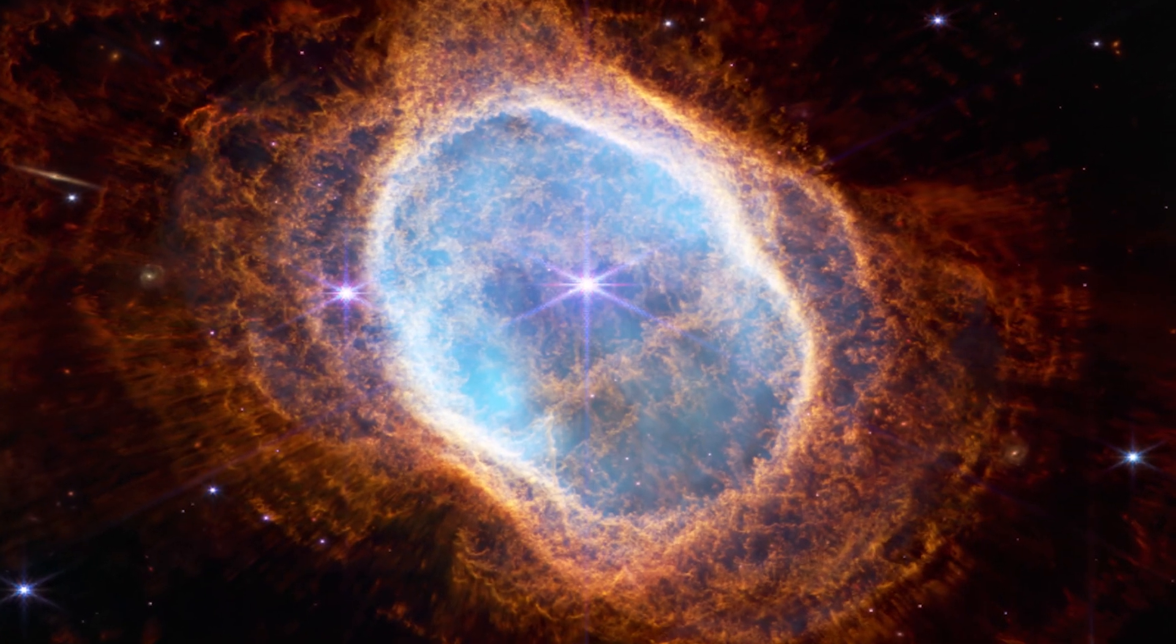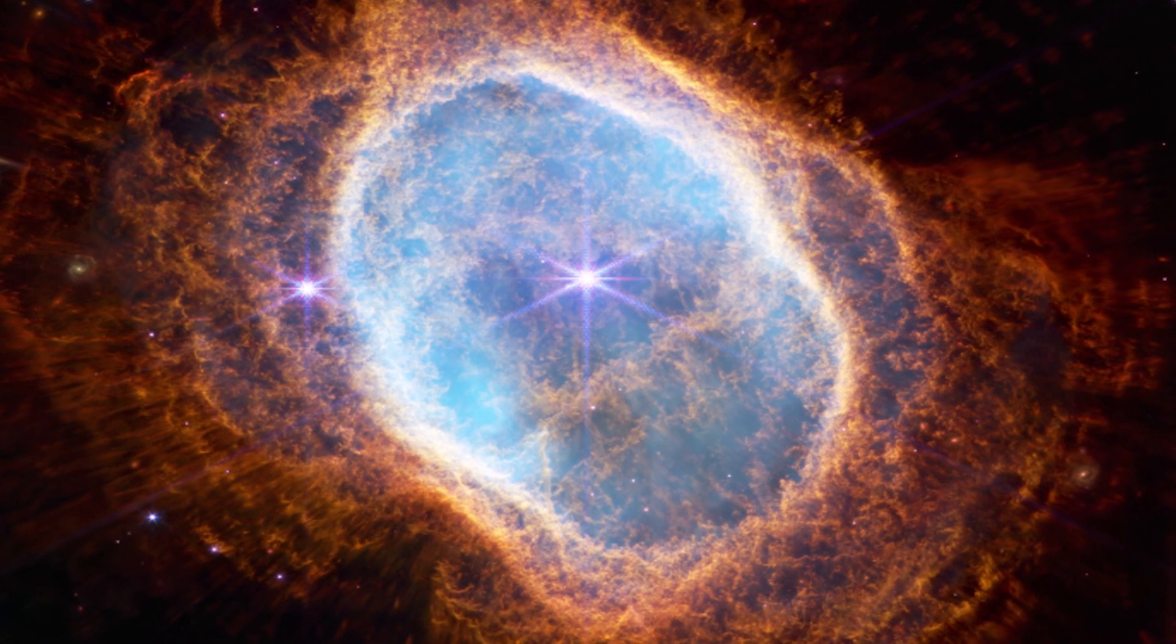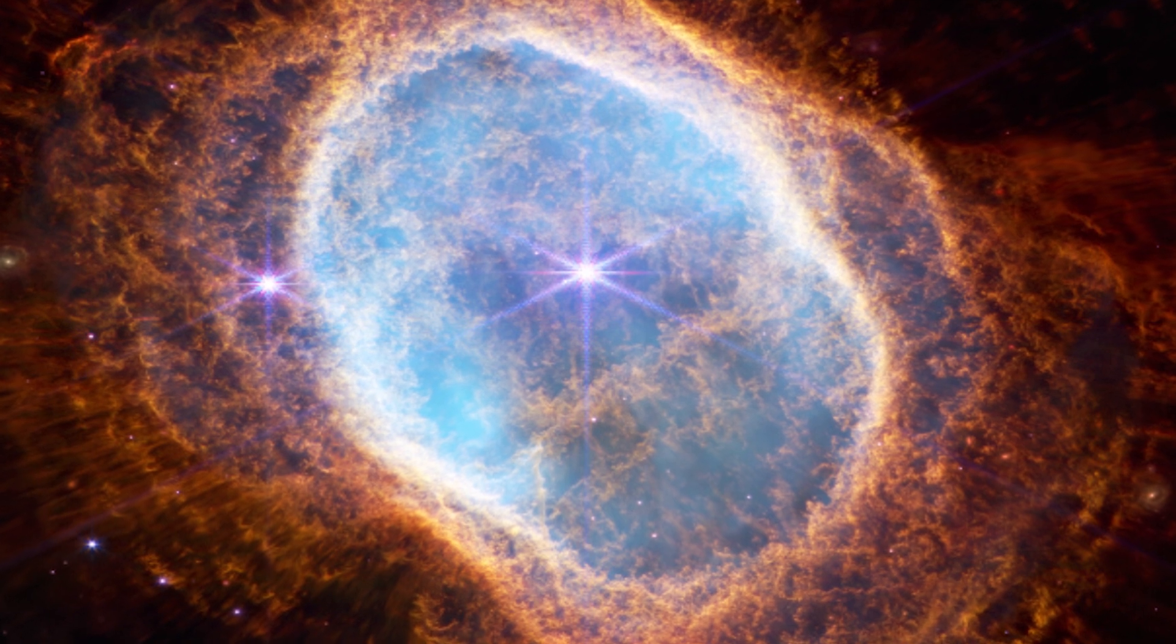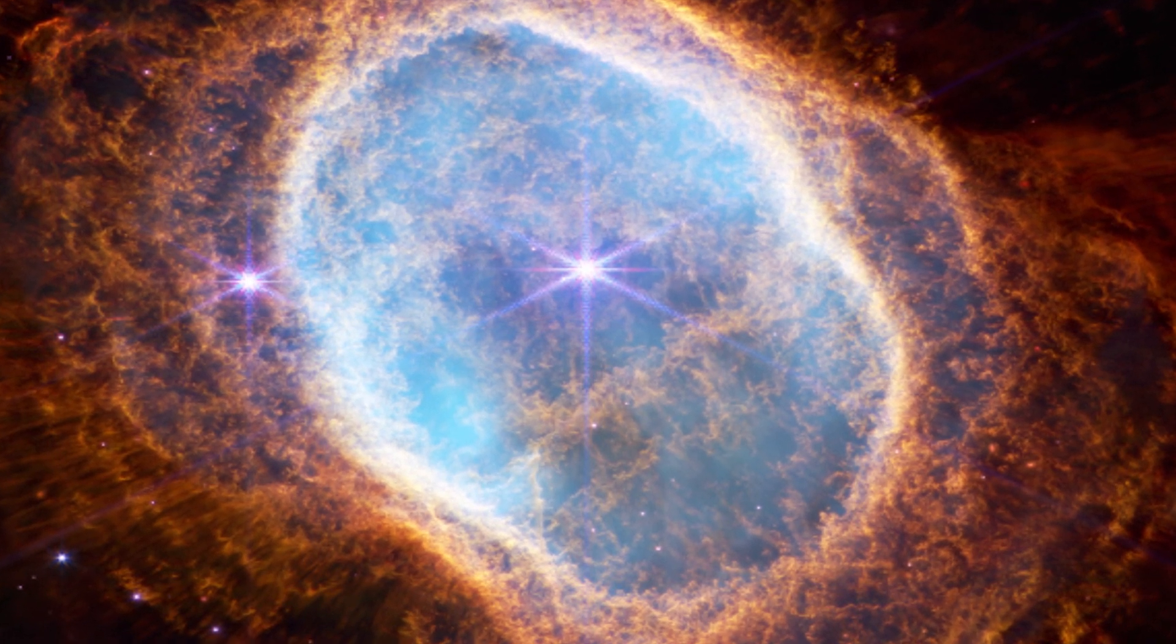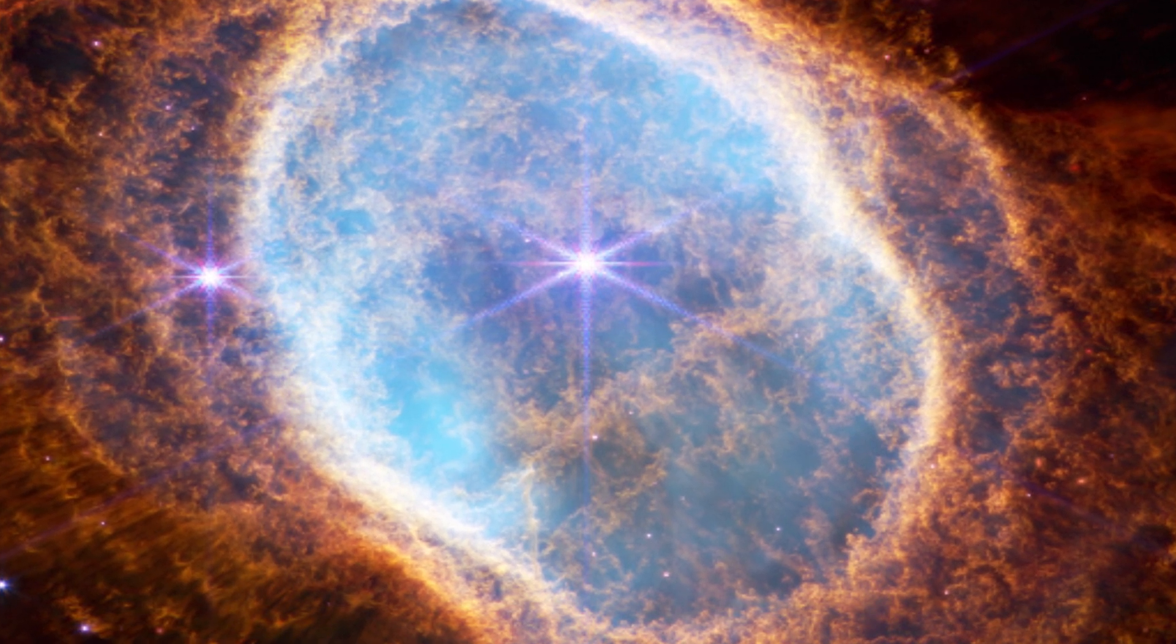Some stars save their best for last, NASA wrote in a blog post. The dimmer star at the center of this scene has been sending out rings of gas and dust for thousands of years in all directions, and NASA's James Webb Space Telescope has revealed for the first time that this star is cloaked in dust.